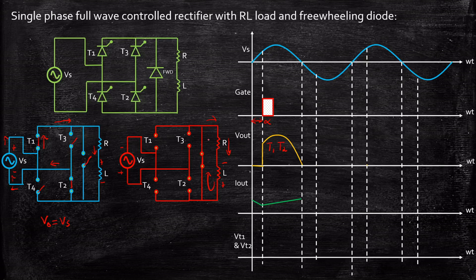The output voltage will be equal to zero when the freewheeling diode is conducting because it is acting as a short circuit. As a result Vout equals zero. The current is still flowing in the same direction as previously. The output voltage waveform shows zero during this region where the freewheeling diode is conducting.